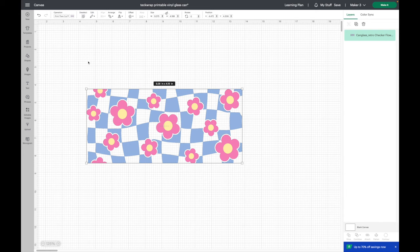I have it sized and I have it set for print then cut. What's nice about this compared to cutting this out on vinyl is if I was doing vinyl, I would have to cut out three different colors and I would have to make sure this yellow was centered perfectly inside the pink flowers. This is nice because you don't have to layer the vinyl at all. I'll click on make it.